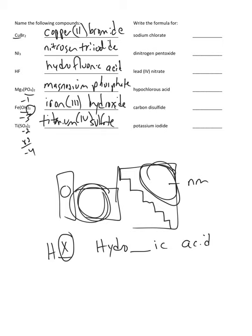Now writing formulas: sodium is Na, which is in group one. Any element in group one will have a plus one charge. Group two is plus two. Group 13 is plus three, and any element below the staircase in group 14 will have a plus four charge.